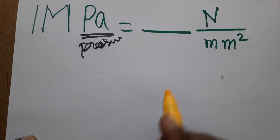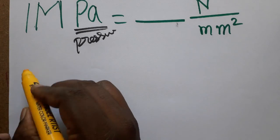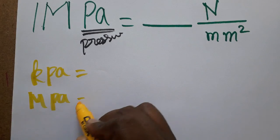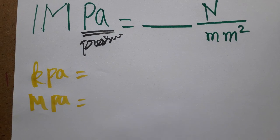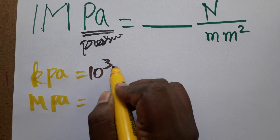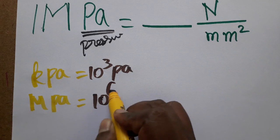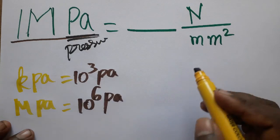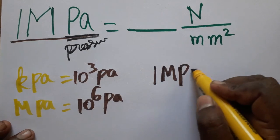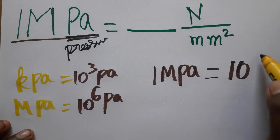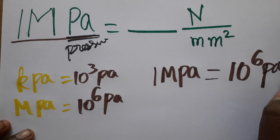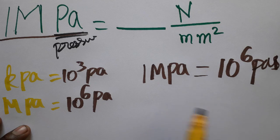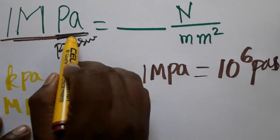Let me show you kilo pascal and mega pascal. Kilo pascal is 10 power 3 pascals, and mega pascal is 10 power 6 pascals — just a conversion. So one mega pascal is equal to 10 power 6 pascals. In short form, pascal can be written as 'Pa'.